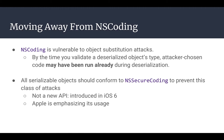NS Coding is vulnerable to object substitution attacks. The critical flaw is that the deserialized object has been used before it's been validated. This attack is well known and is an issue in other environments as well — for example, Python's pickle module is vulnerable to this exact same type of attack.